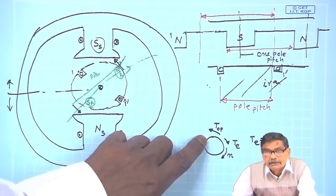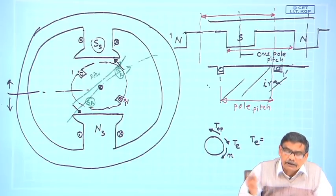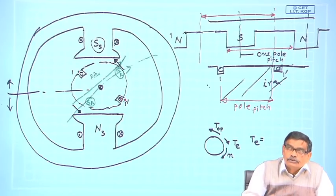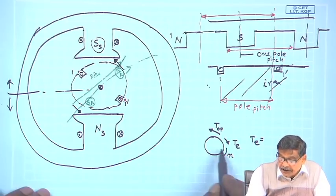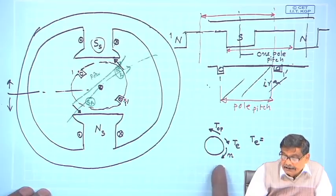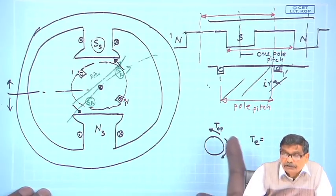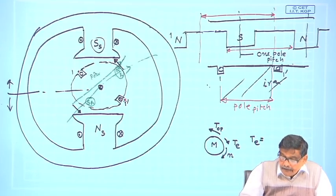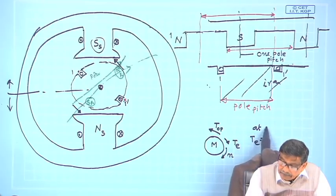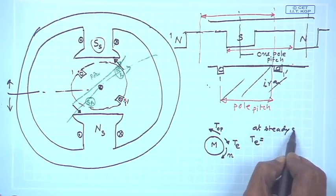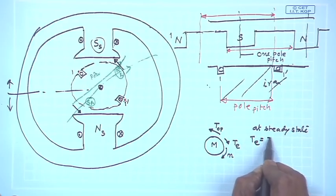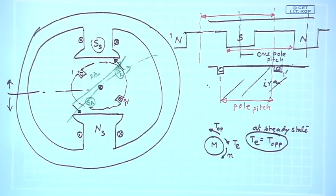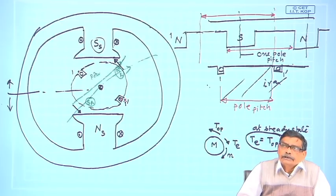What is T-opposition? It could be friction existing in the system, or maybe you are doing some mechanical work — for example, the motor is running a pump. The opposing force is what the motor turns against; the direction of T decides in which direction the motor is going to run. At steady state, T must equal T-opposition. The machine will find its own steady state operating point, as we have seen in the case of a single conductor generator.